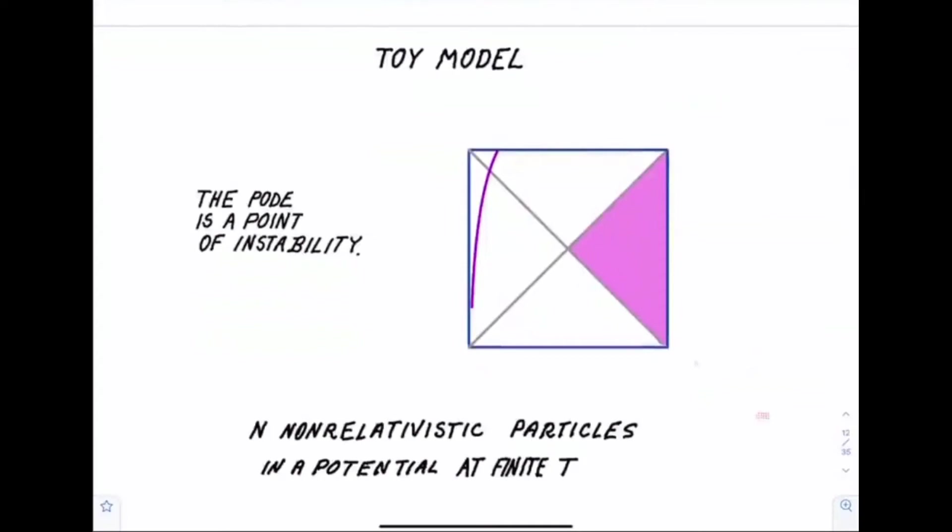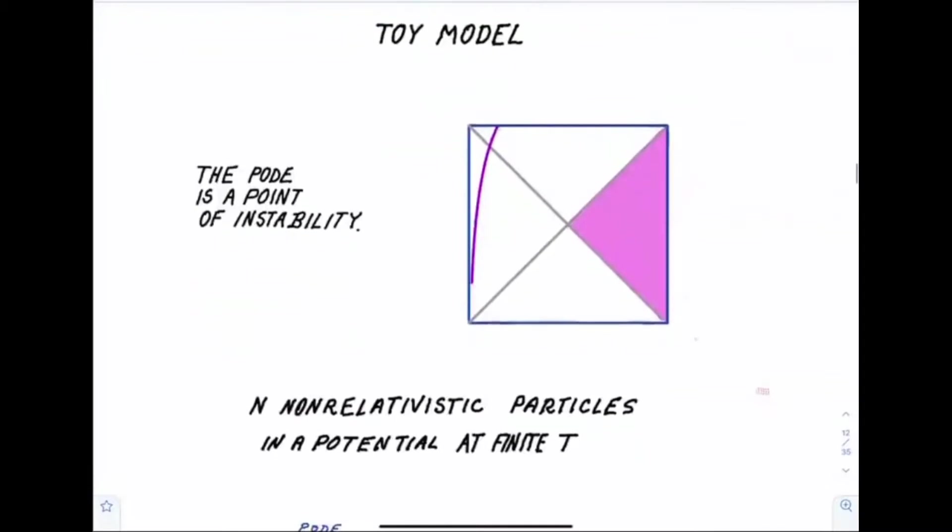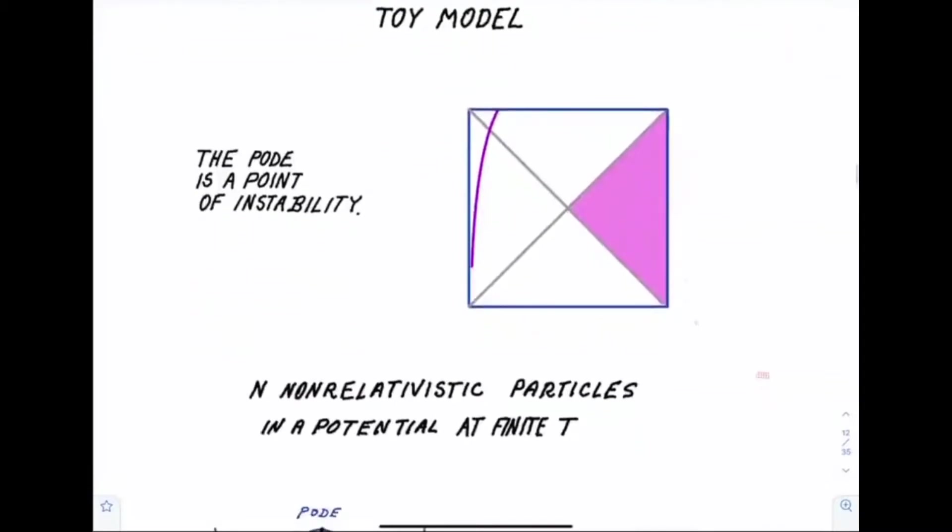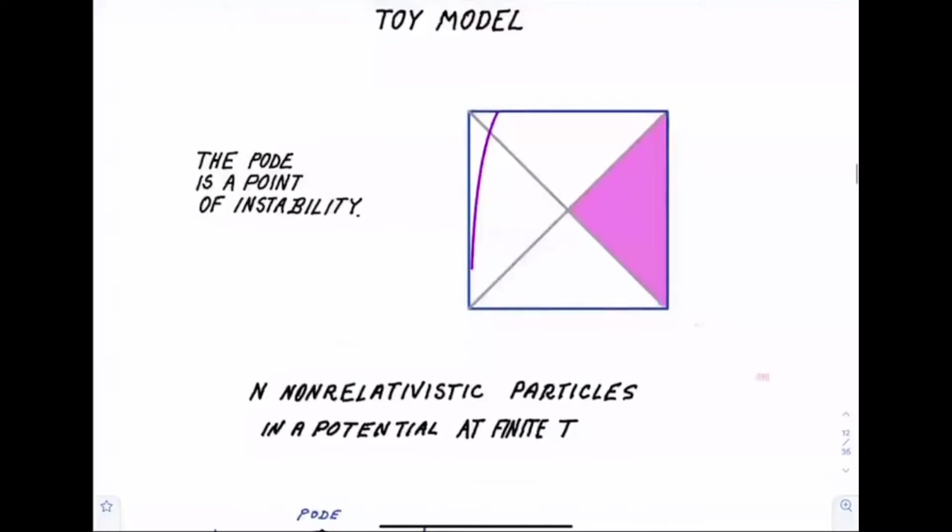Just mainly as a foil for talking about things later, I want to introduce a toy model. The toy model isn't a good model. It does not describe decently any kind of anti-de Sitter space, but it's a useful foil for discussing de Sitter space later.